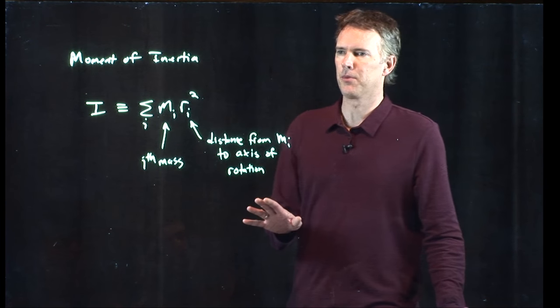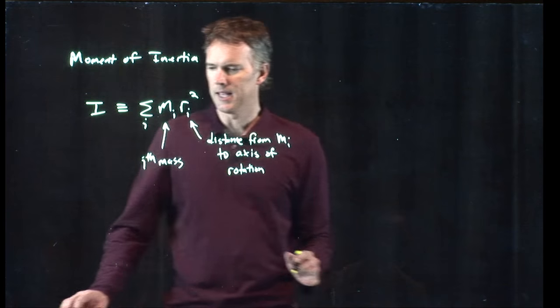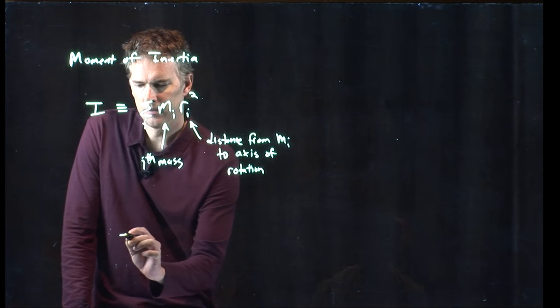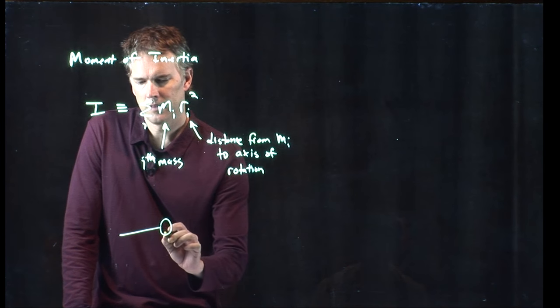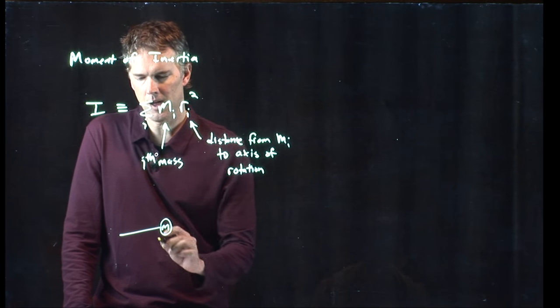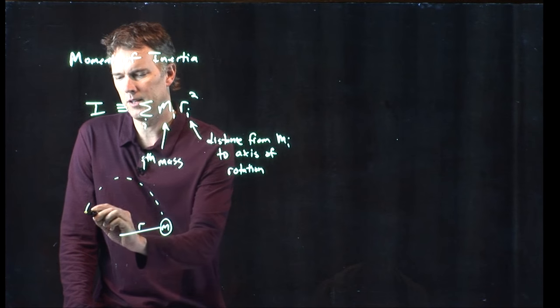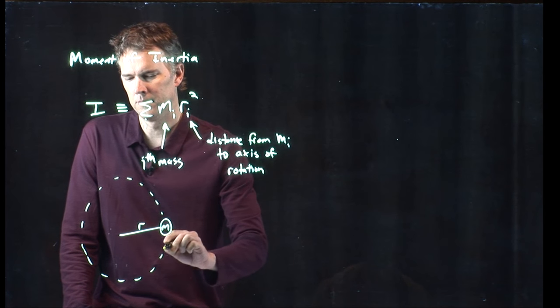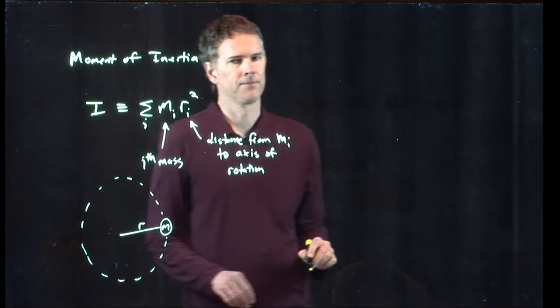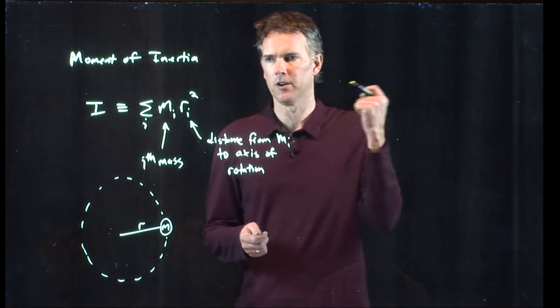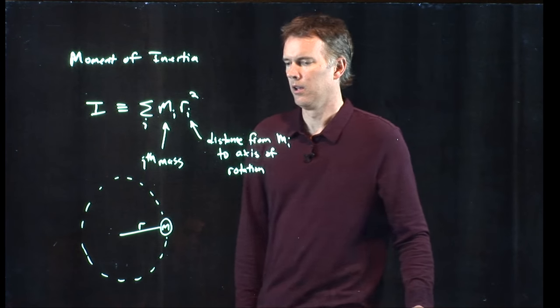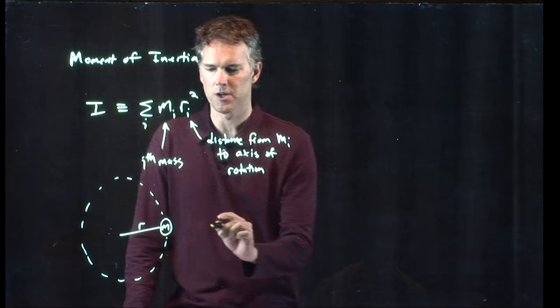So if we're thinking about something simple, like a particle on a string, let's say here's my mass m and it's sitting out there at radius r and it's spinning around in a circle. If you're yo-yo on a string, you're going to spin it around in a circle. What is the moment of inertia here?